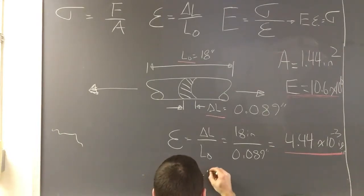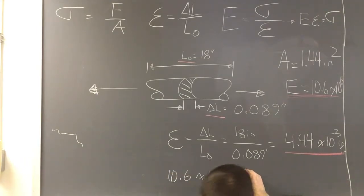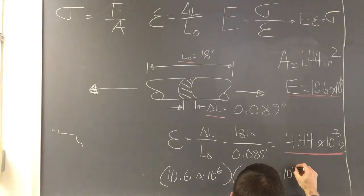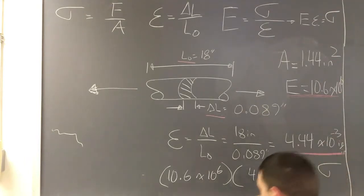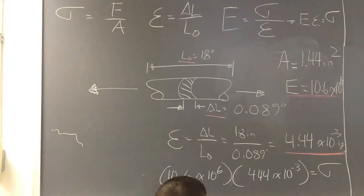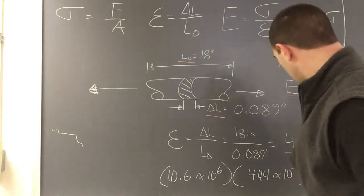10.6 times 10 to the 6, times 4.44 times 10 to the negative 3 - that's a very large number, that's a very small number - but it's going to give us stress, which in this case is going to be 52,406 psi. Sounds pretty reasonable.